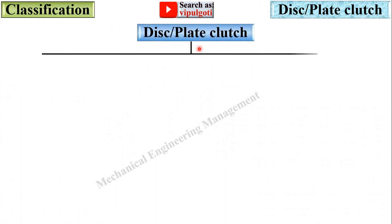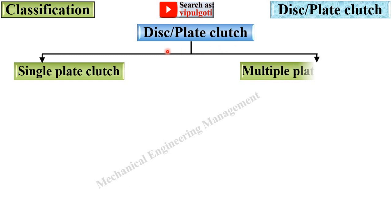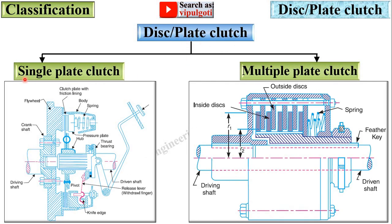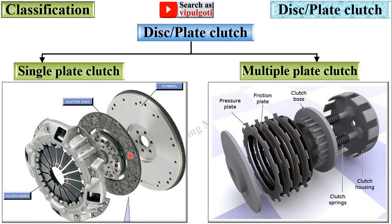Now let's start with the classification of the disc clutch or plate clutch. It is divided into two types: single plate clutch and multiple plate clutch, sometimes called multi plate clutch. Here you can see a single plate used in the clutch, and in the other type multiple plates are used, so that it is called the multiple plate clutch.